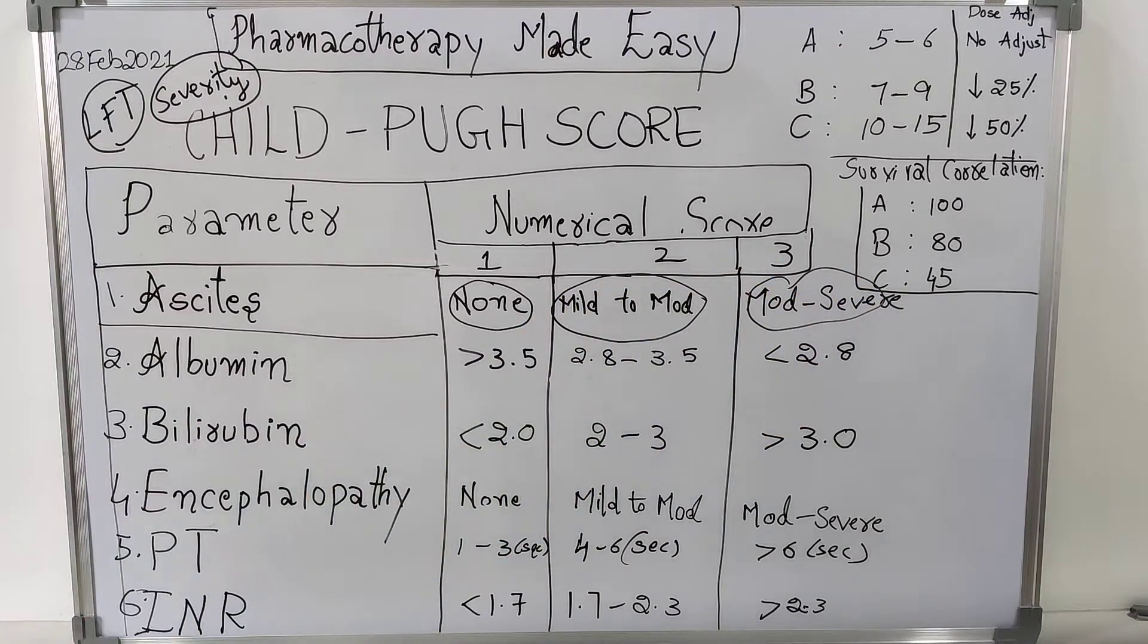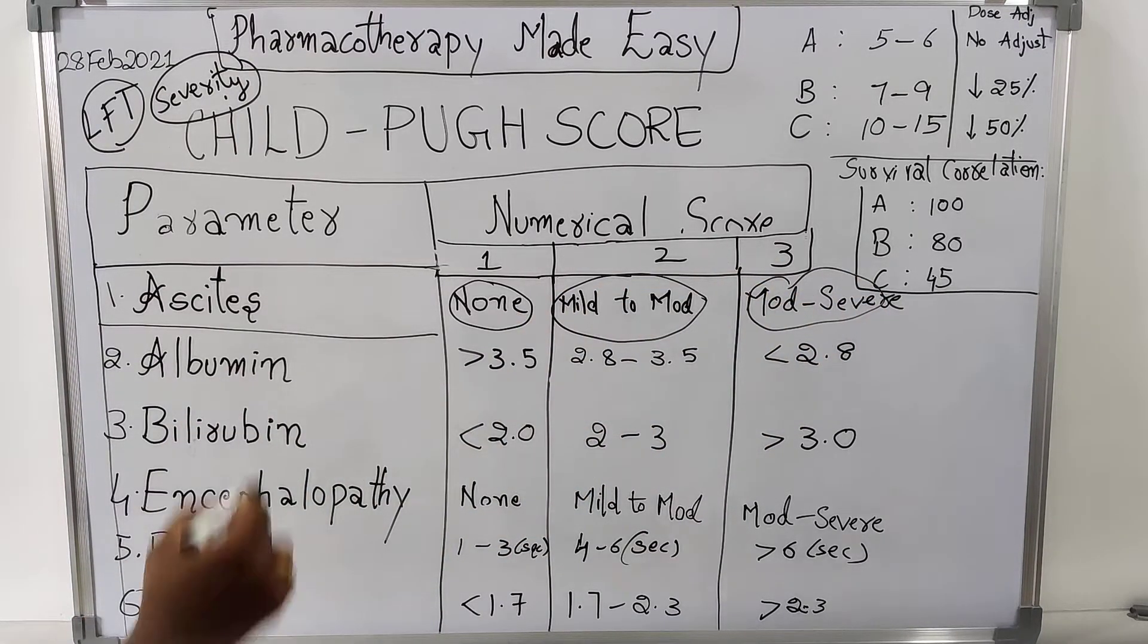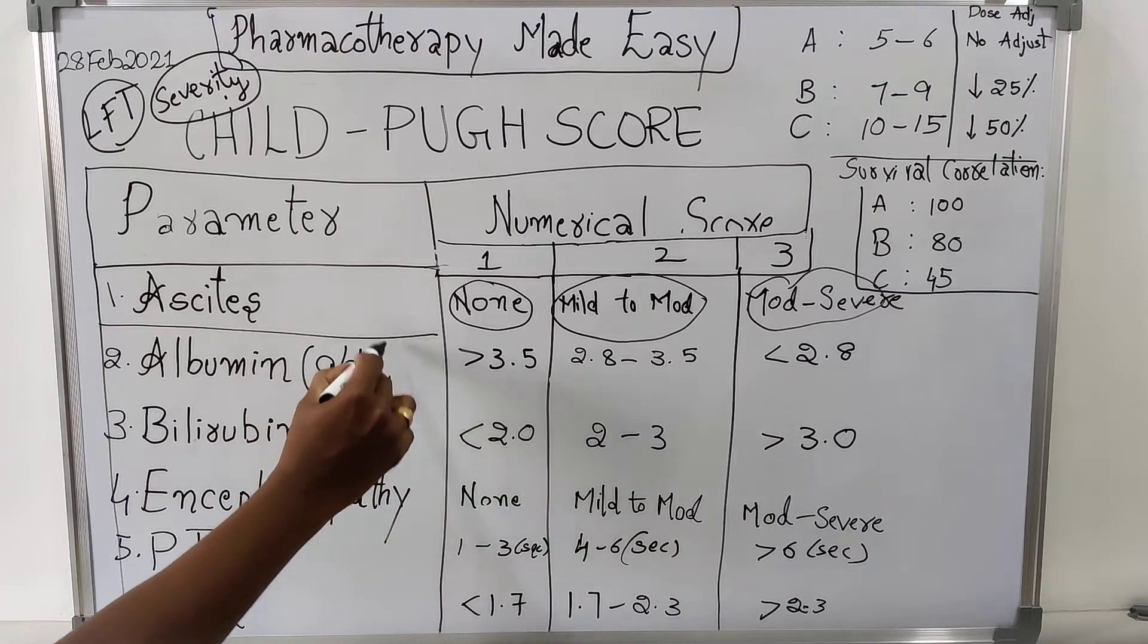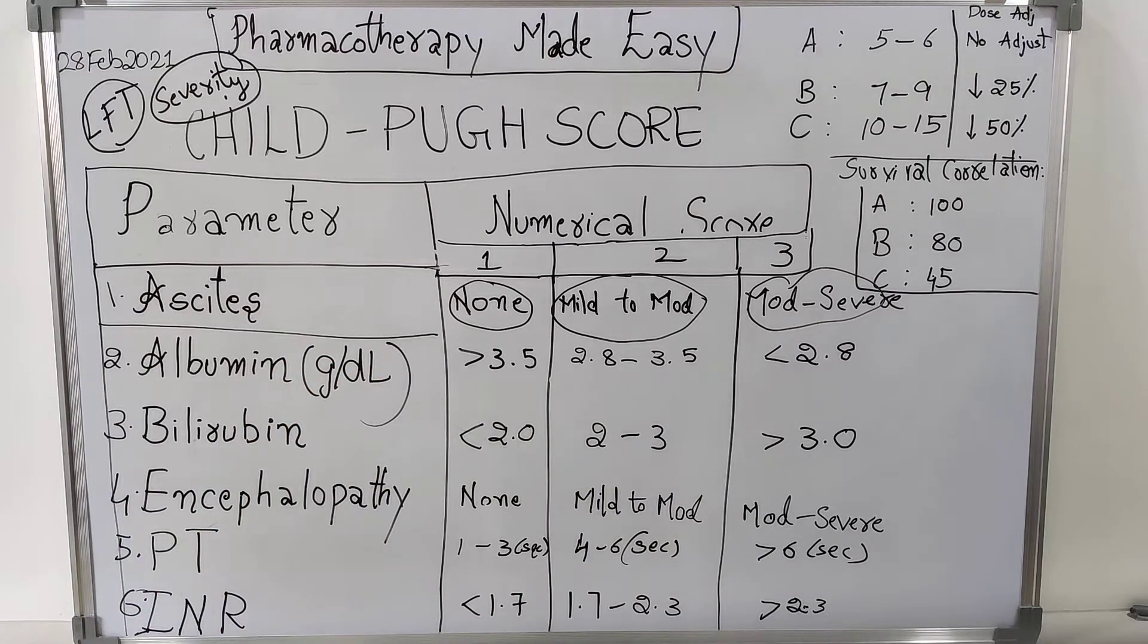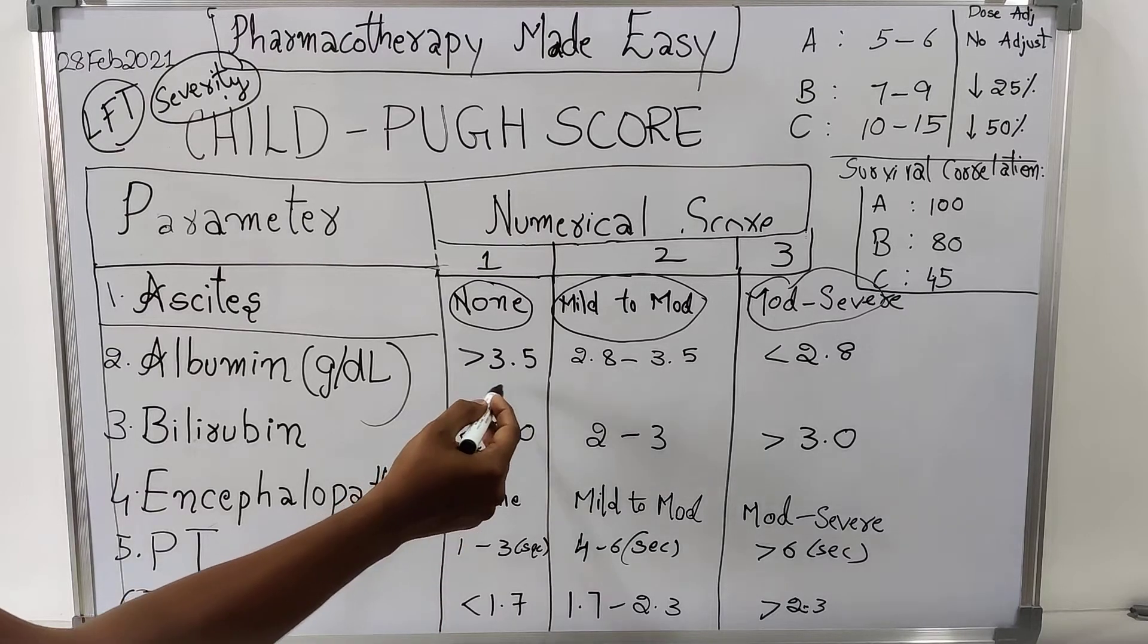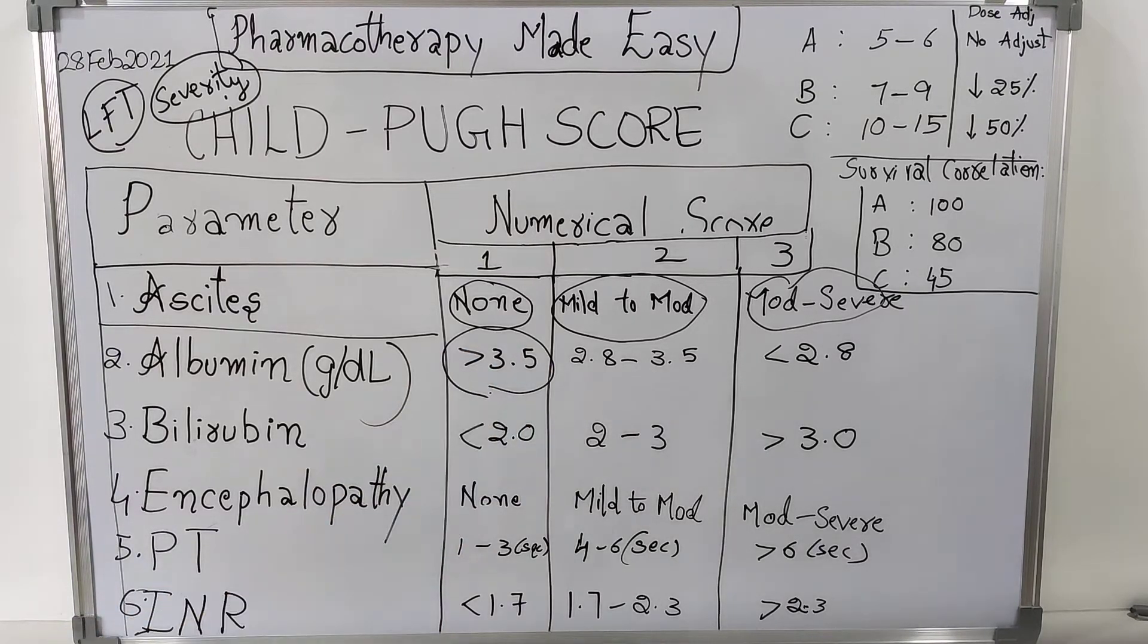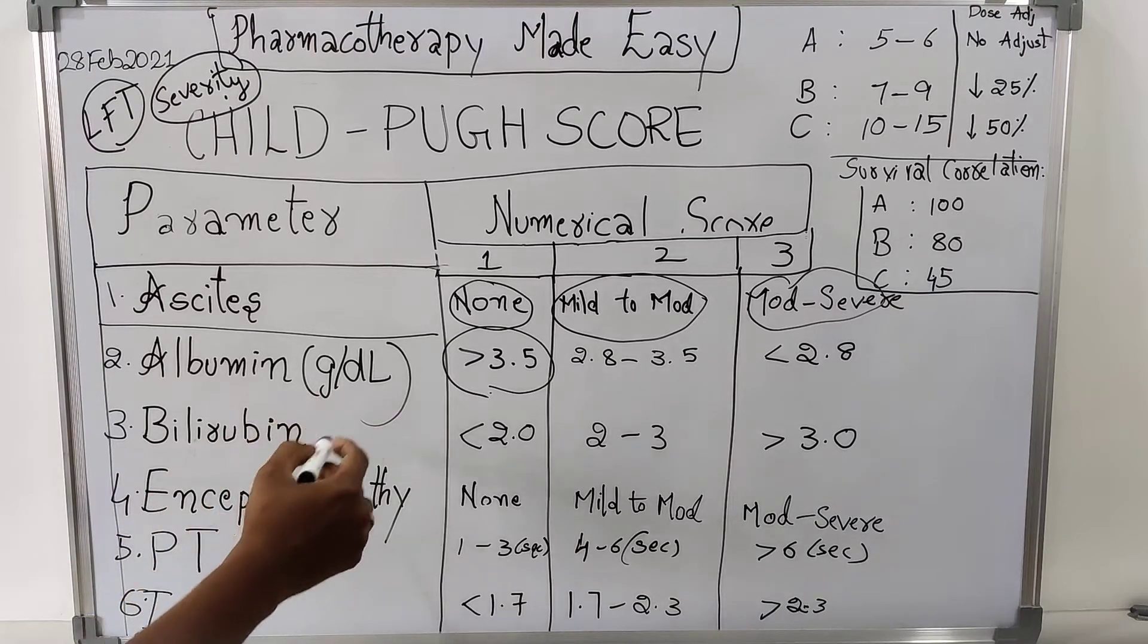In the same way, presence of albumin in serum will be calculated in grams per deciliter. If the serum concentration of albumin is greater than 3.5, score will be given as 1. If it is in the range of 2.8 to 3.5, score will be given as 2. If it is less than 2.8, score will be given as 3.